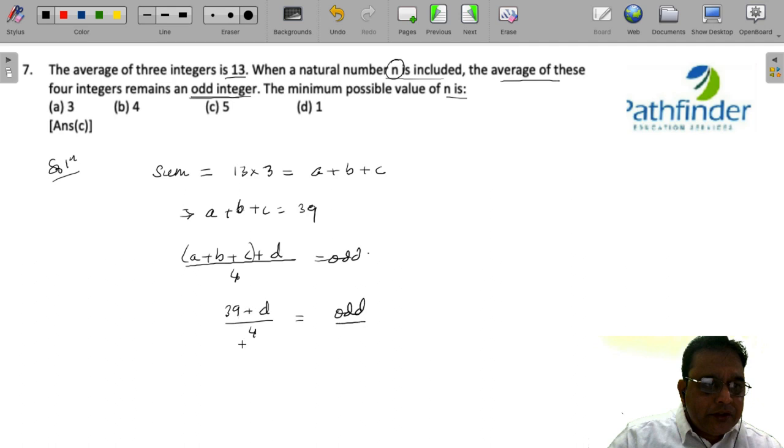So obviously, if you look at the possible values of these odd integers, the sum must be greater than 39. The first odd multiple of 4 that comes to my mind is 44. Then we have 52.